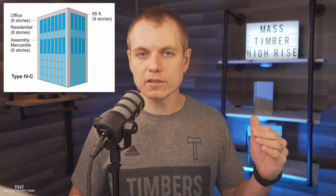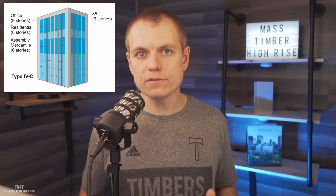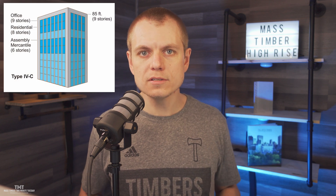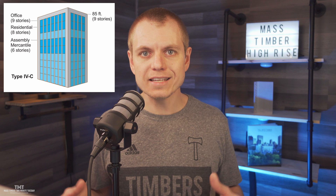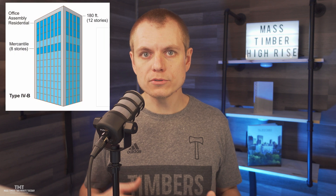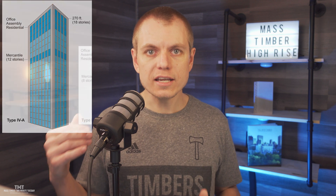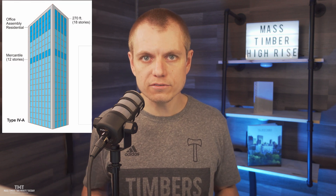Looking at the new construction types in the 2021 IBC for tall mass timber construction: type 4C allows you to go up to 8 stories for multifamily occupancy, or 9 stories for business occupancy, both limited to 85 feet from grade to roof. Type 4B construction allows up to 12 stories and 180 feet, and type 4A construction allows up to 18 stories or 270 feet.